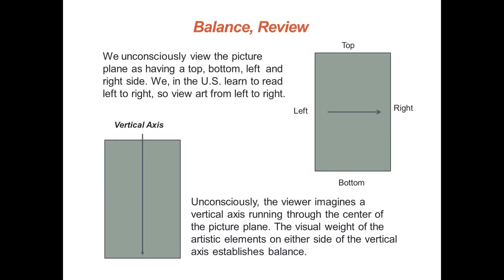Here's a review. On an unconscious level, the viewer sees the picture plane as having a top, bottom, left, and right. For those of us raised in Western culture, we look at the picture plane from left to right, reflecting how we've learned to read. Another thing we do unconsciously is whenever we see the picture plane, we create a vertical axis that divides the picture plane down the center — our way of trying to make order out of chaos.